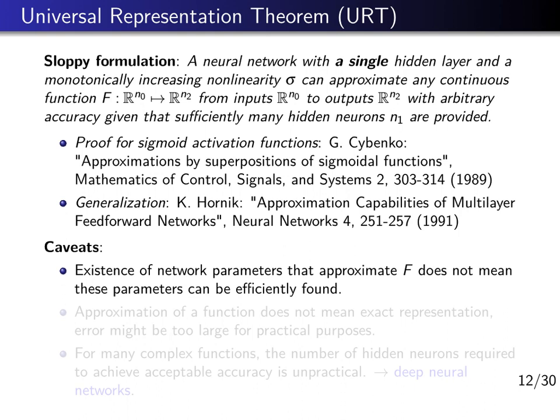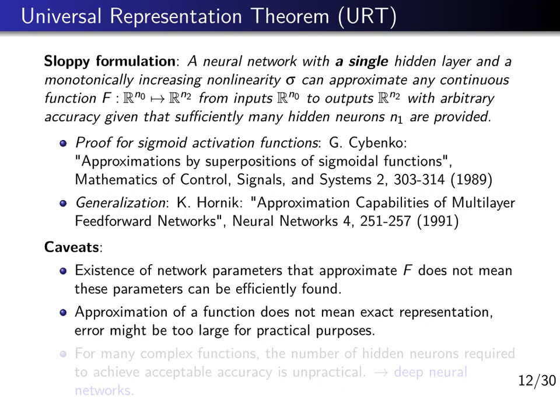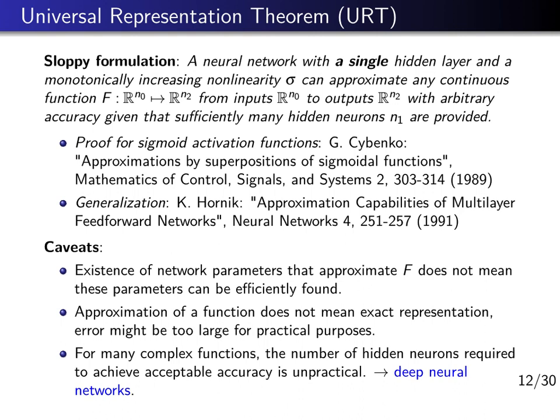There are some caveats, however. First, just the fact that we can prove a network can in principle learn a certain function doesn't mean we know how to do that. The proof that such parameters exist doesn't give us an algorithm to find them, and that can be a big issue. Second, even if we can approximate a smooth function arbitrarily well in the limit of infinitely many hidden neurons, that doesn't mean we can get an acceptable error with a manageable number of neurons — for many complex functions, the number of hidden neurons needed for acceptable accuracy is huge.